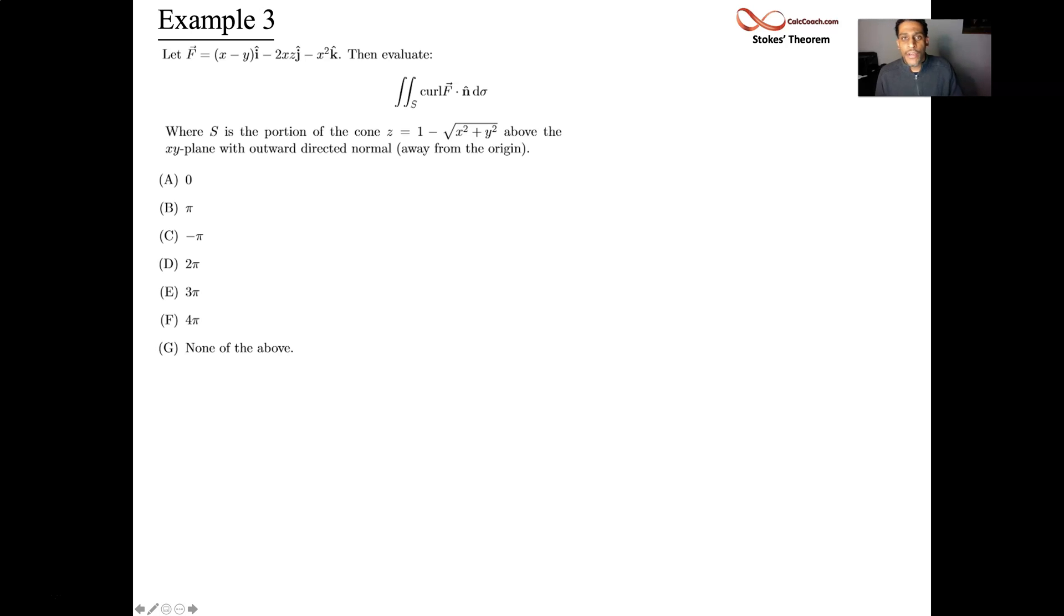So in this example here, we have a vector field and we're asked to calculate the flux of the curl of the vector field. And our surface S is a cone, a portion of the cone that is above the xy plane. That cone has the equation 1 minus the square root of x squared plus y squared.